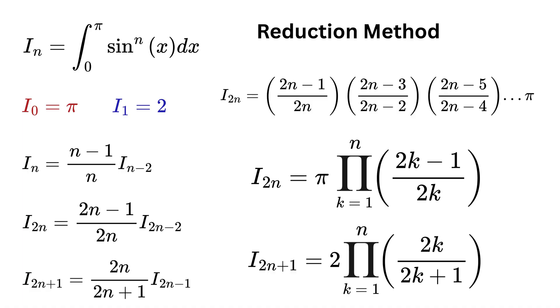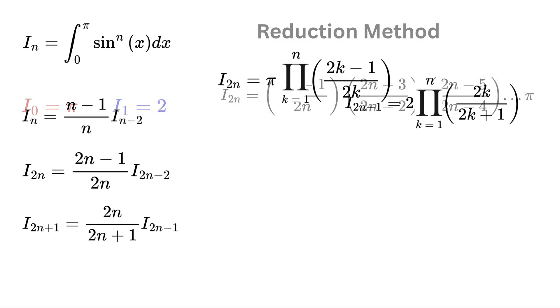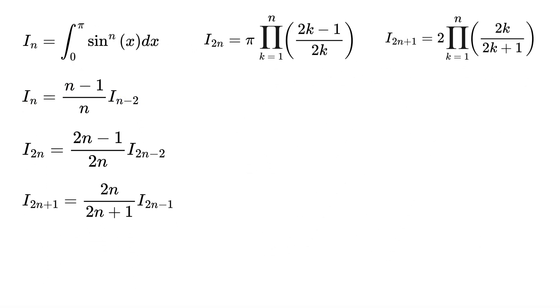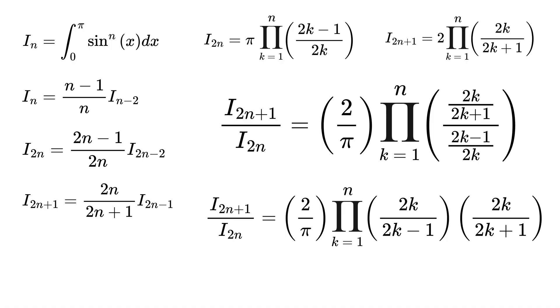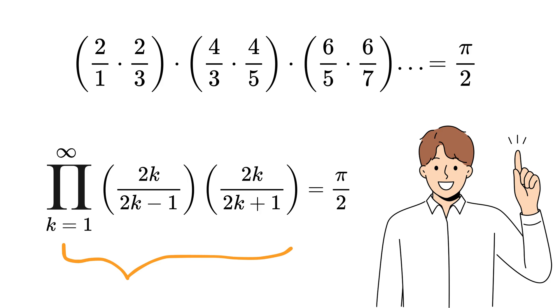Next is to consider the ratio of these two integrals, odd over even. We get (2/pi) times product k equals 1 to n of (2k)/(2k+1) times (2k-1)/(2k), or simply (2k)/(2k-1) times (2k)/(2k+1). And hey, remember this is the exact product that we are interested in.